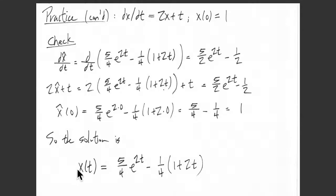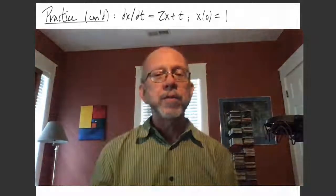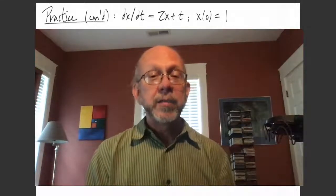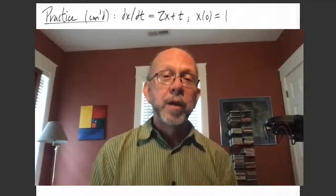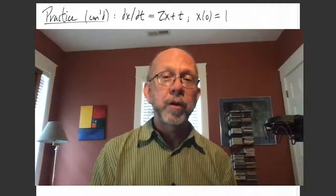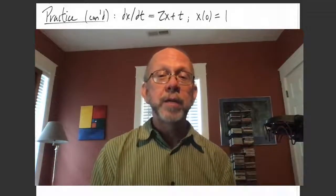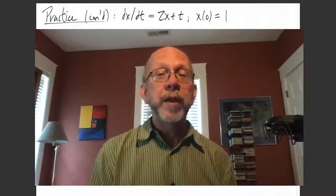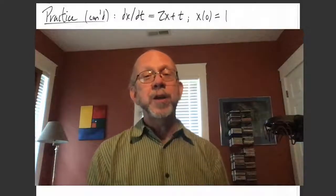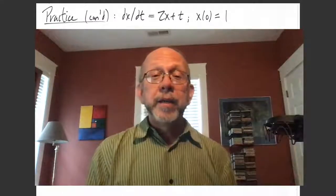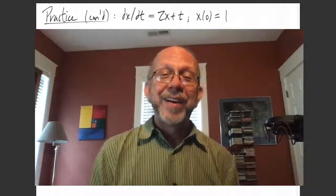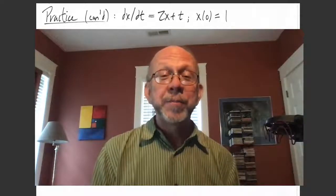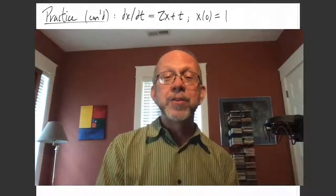We can now remove the hat — this is indeed our solution x(t) = (5/4)e^(2t) − (1/4)(1 + 2t). That is the power series method of solution in action. It's very powerful, though sometimes the computations can get more involved. Your next homework, homework 20, will ask you to go through this process with a slightly different ODE. Let me know if you have any questions, stay well, and take care.